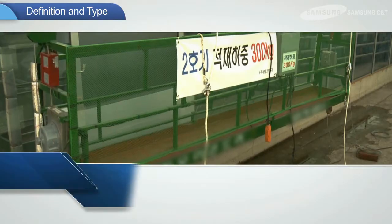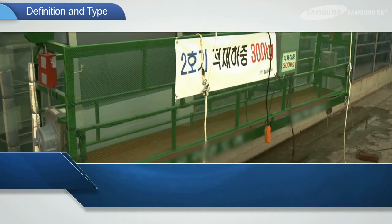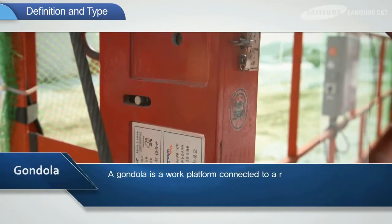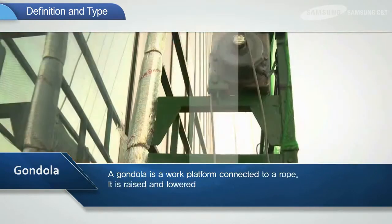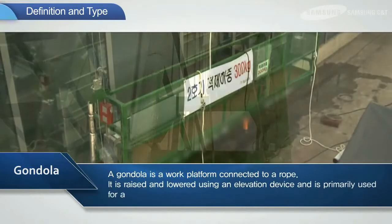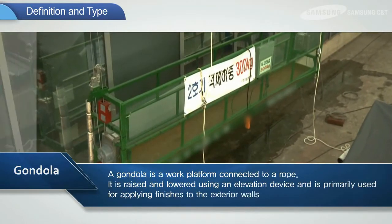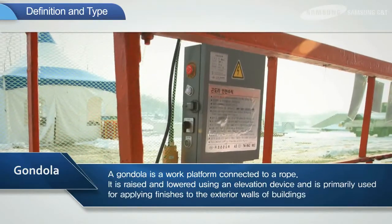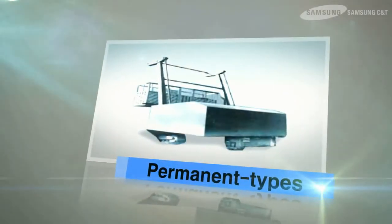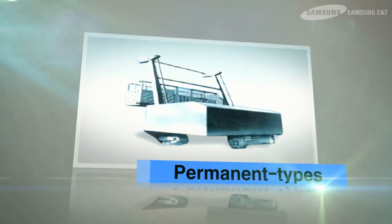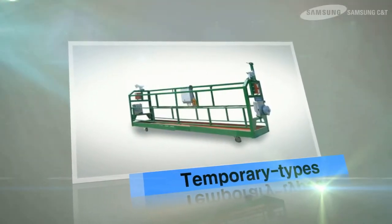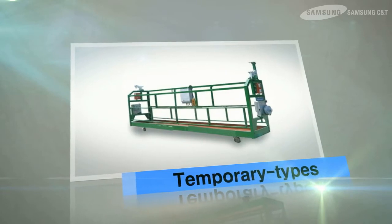First, let's take a look at the definition of a gondola and gondola types. A gondola is a work platform connected to a rope. It is raised and lowered using an elevation device and is primarily used for applying finishes to the exterior walls of buildings. Gondolas are categorized into permanent types or temporary types depending on the installation methods. Most gondolas used on construction sites are temporary.